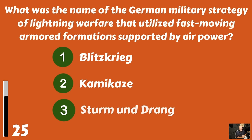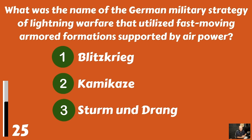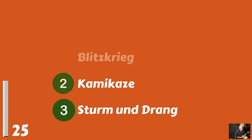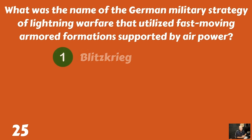What was the name of the German military strategy of lightning warfare that utilized fast-moving armored formations supported by air power? Blitzkrieg? Kamikaze? Or Sturm und Drang? And that would be Blitzkrieg.